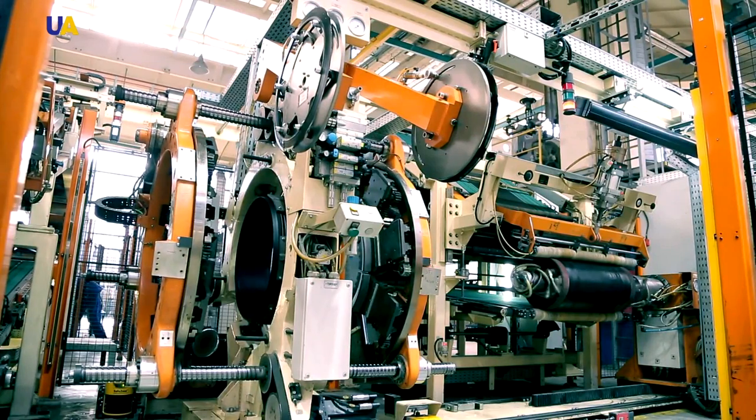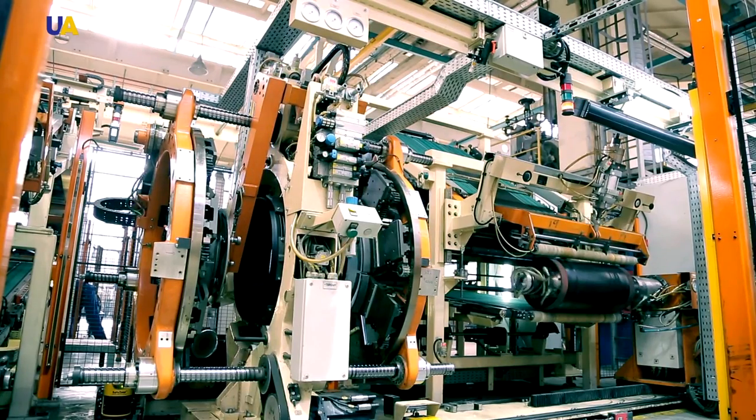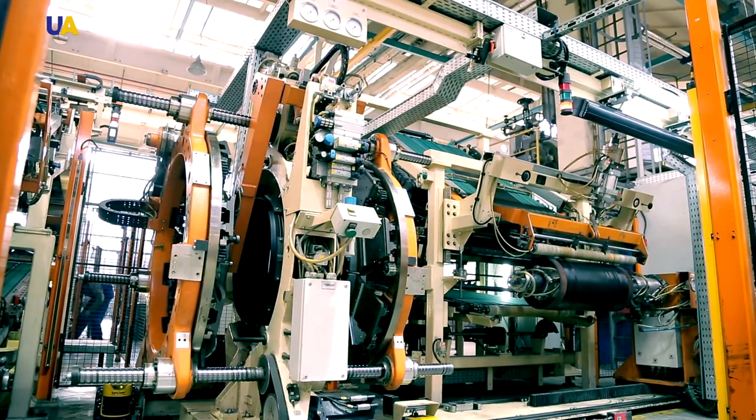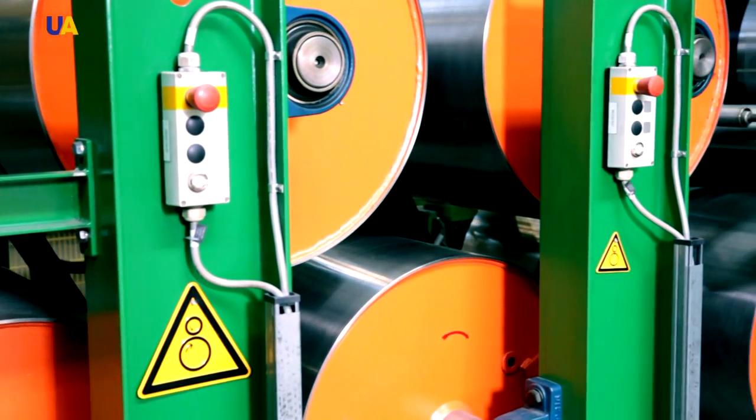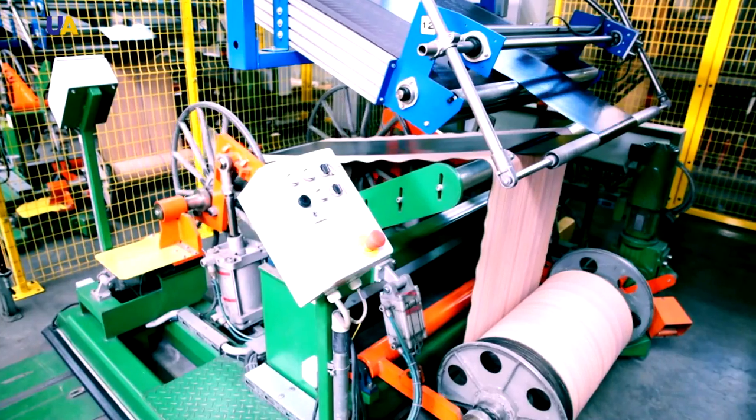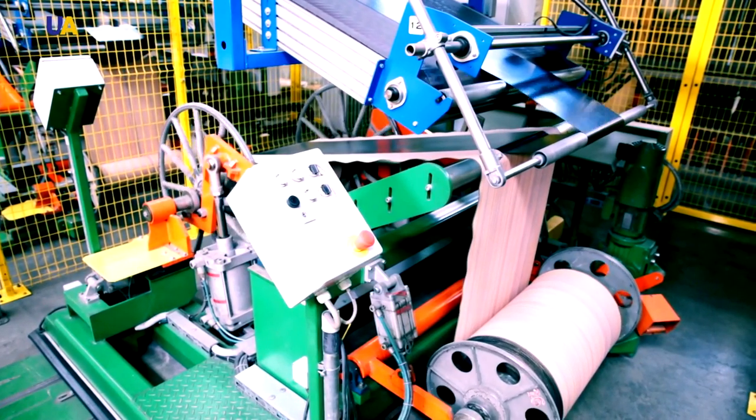The line operates 24 hours a day with small technological breaks, which include shift changeover and transition from size to size. The extrusion line for the production of sealed layer part consists of a pin extruder where the rubber mixture is processed and heated.